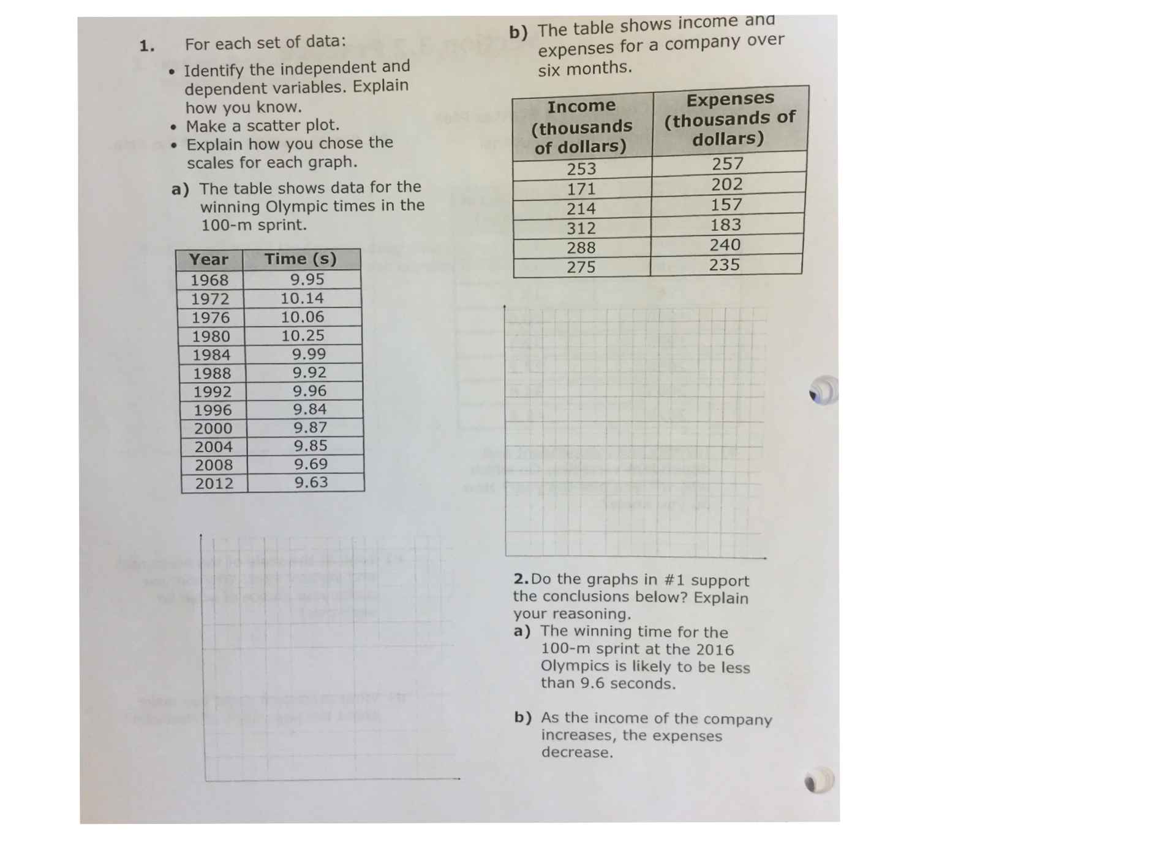We're going to look at the first example, number one. The table shows data for the winning Olympic times for the 100-meter sprint. Did anyone ever do a 100-meter sprint in track and field in elementary school? Okay, we're looking at a comparison between the year of the Olympics. How often does the Olympics happen? Every four years. Every four years. So we're looking at data from the Olympics starting in 1968 all the way up to 2012. This is real data.